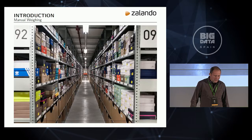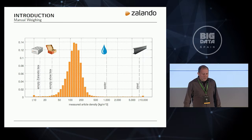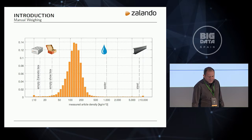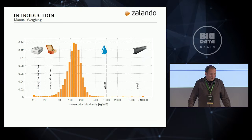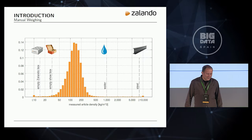Moreover, it turned out that this process is rather inaccurate. We can easily check that by looking at the histogram of density, computed as volume over weight, for our articles. We see that a good part of our articles would be heavier than water, even heavier than solid steel. On the other hand, quite a number of articles would be lighter than an empty shoebox or an empty parcel box, which is quite weird. These outliers are certainly errors in the manual measurement process, and that was the point where we thought: can't we improve that process with some machine learning?